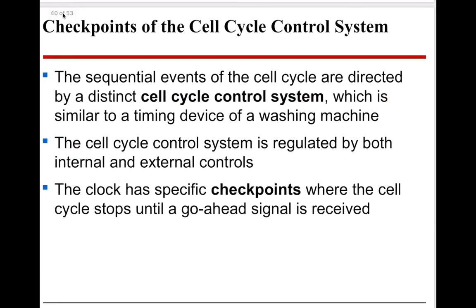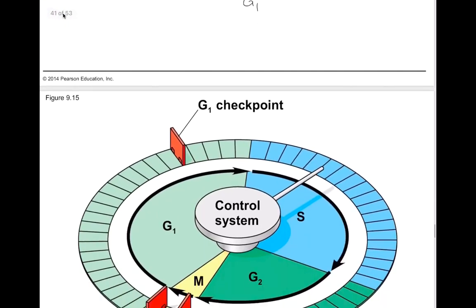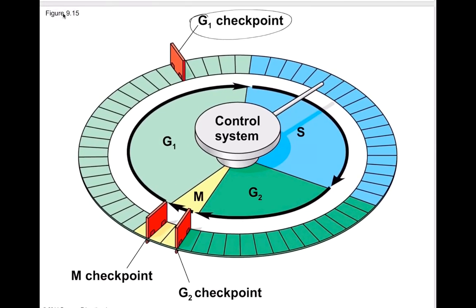We also have checkpoints — the cell cycle control system has a series of events directed by discrete and distinct controls, similar to the timing of a washing machine going through its cycles. The cell cycle control system is regulated by both internal and external controls. There are specific checkpoints where the cell cycle stops until a go-ahead signal is received. There are three main checkpoints: the G1 checkpoint, the G2 checkpoint, and the M checkpoint.